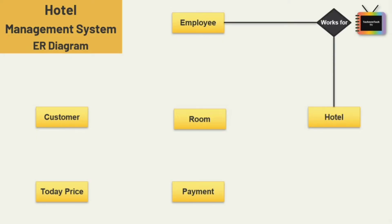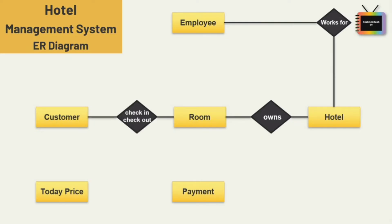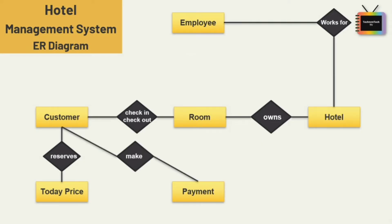Next, hotel owns rooms. Then we have the entities customer and room — customer checks in and checks out of a hotel room. Customer also checks and reserves a room according to today's price. Once the customer books their room, they have to make a payment, so I am adding a 'make' relationship between customer and payment — customer makes payment.